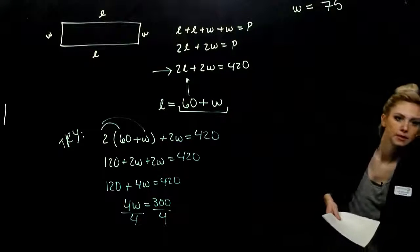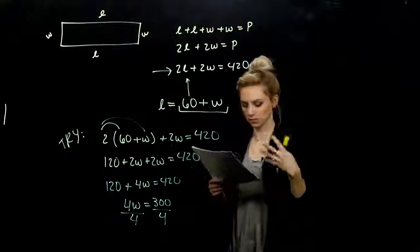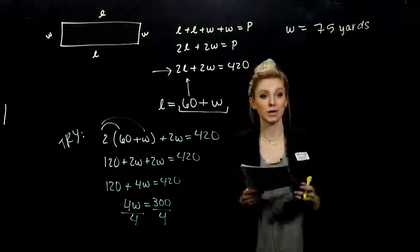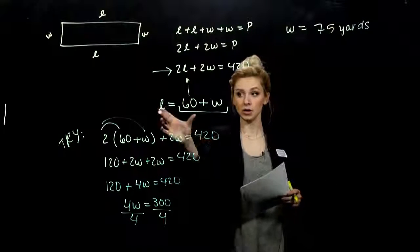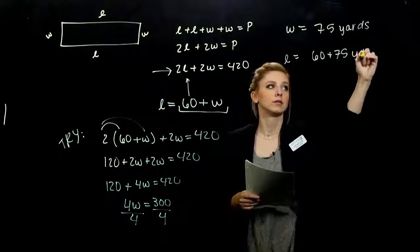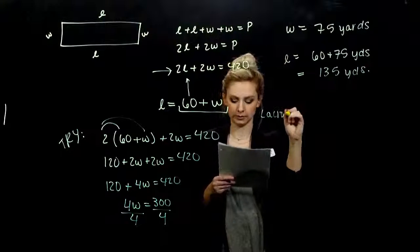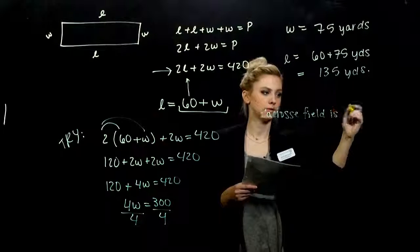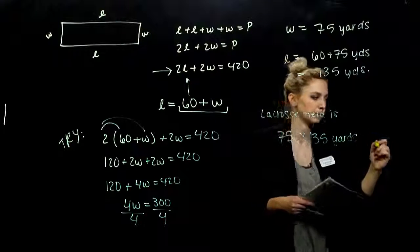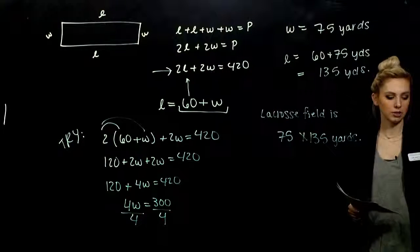75, what are our units in this problem? What were we talking about? I haven't written them anywhere, so we've got to look back at the problem. Yards. Everything is in terms of yards. So W is 75 yards. But we were asked to find the dimensions. We also want the length. And I know the length in relationship to the width. So length is 60 plus 75 yards, which is what? 135. So to sum it up, the lacrosse field is 75 by 135 yards. And if you weren't sure if you were correct, how could you check? Plug in those numbers, the length and width back into the perimeter equation and make sure that it's actually true.